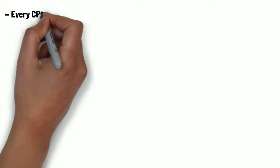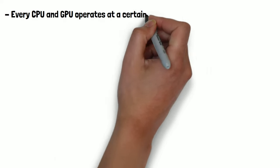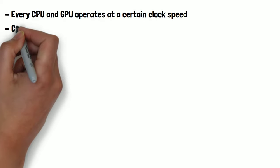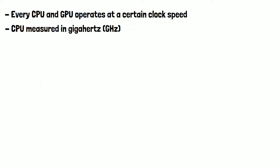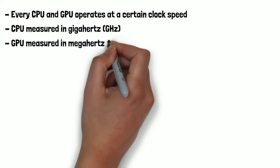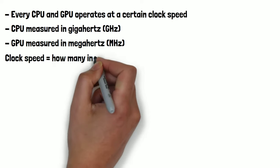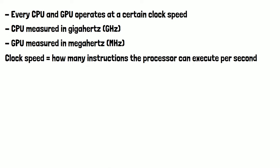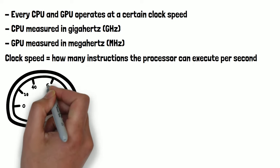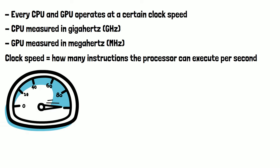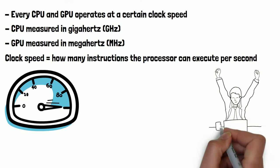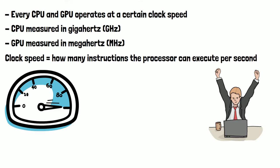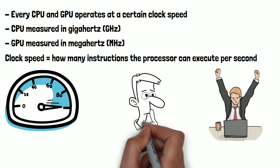Every CPU and GPU operates at a certain clock speed, measured in gigahertz for CPUs and megahertz for GPUs. This clock speed determines how many instructions the processor can execute per second. Overclocking involves increasing this clock speed beyond its default value, increasing the number of instructions the component can execute per second, and therefore increasing its performance. Let's look at some of the pros and cons of overclocking to work out if you should do it yourself.